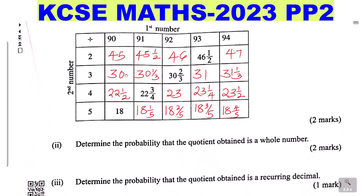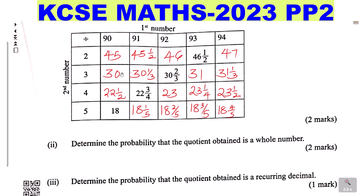Part 2: Determine the probability that the quotient obtained is a whole number. Let us check for the whole numbers in the table. The whole numbers are: 1 is 45, 2 is 46, 3 is 47, 4 is 30, 5 is 18, 6 and 7 — so there are 7 whole numbers. The probability will be 7 divided by the total outcomes.